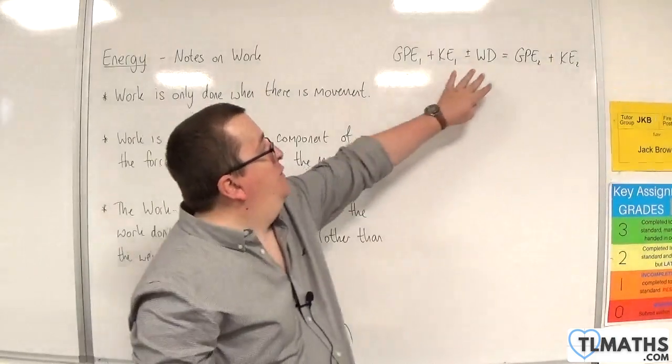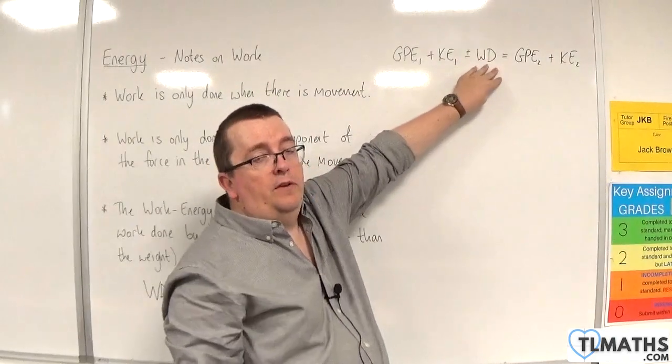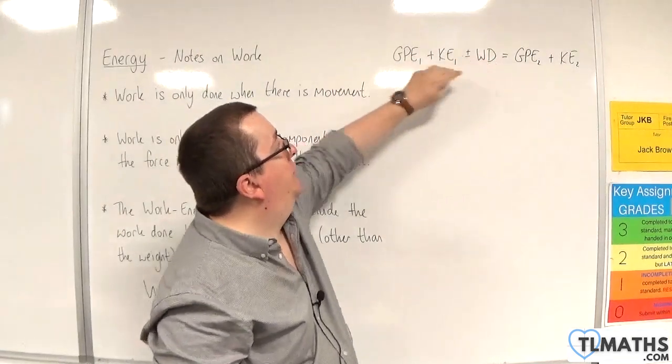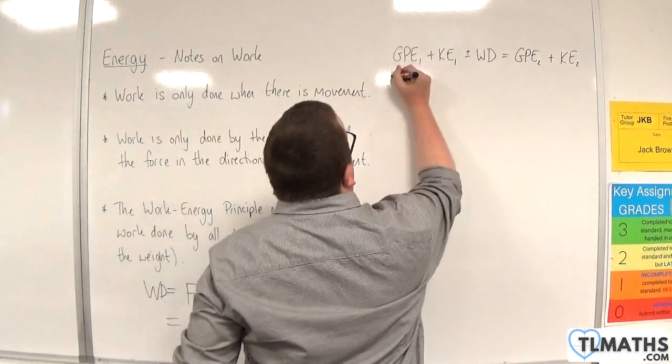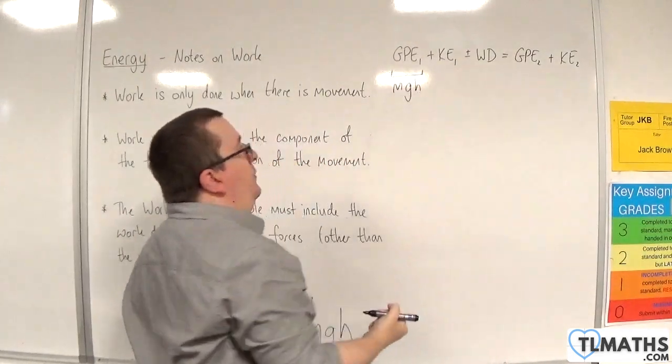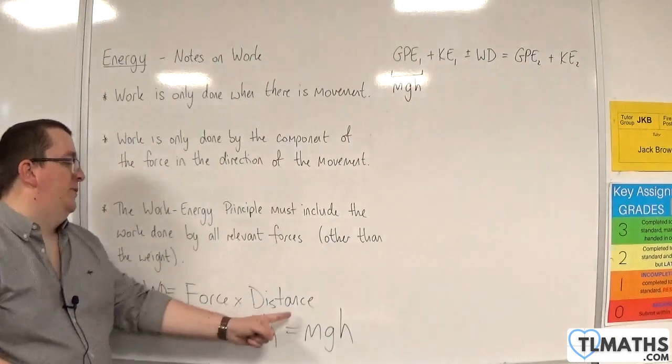So if you included the work done by the gravity here, you would essentially be including it twice because we've already got it here. Here's your MGH, which is your weight times H, which is your force times distance.